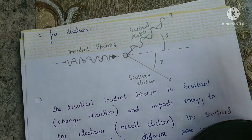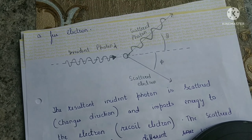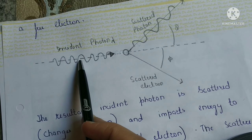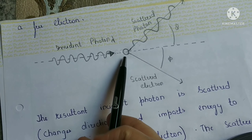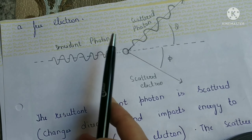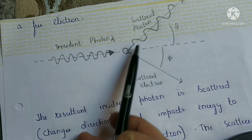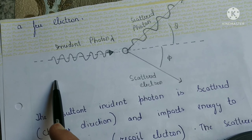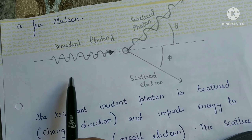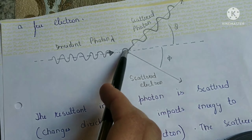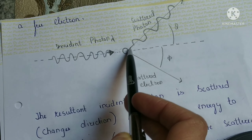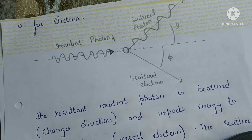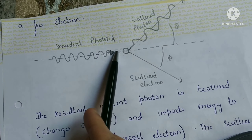I'll be explaining this with the help of a diagram. What happens: the incident photon, which is outside the atom, comes in at very fast speed and accelerates towards a loosely bonded electron of the atom — or we can say a free electron unattached to the atom. After collision, this incident photon is scattered towards another direction; you can see it comes from this direction and is scattered from here.